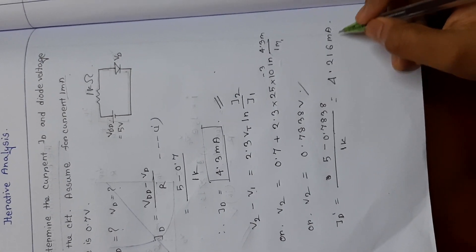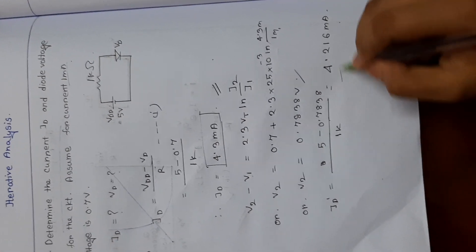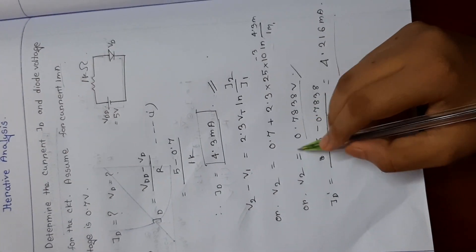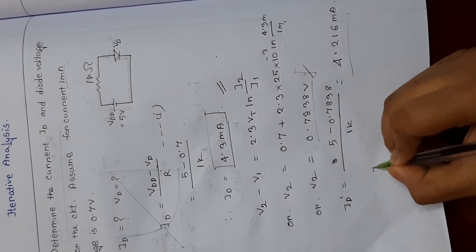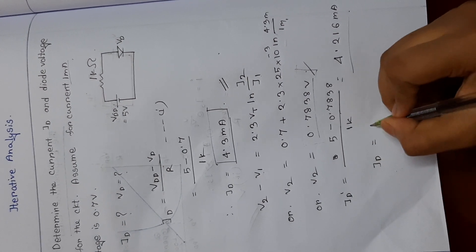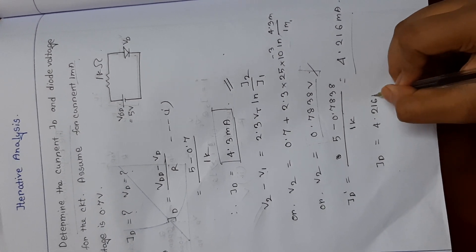And if I want to take more, actually I don't need to take more because I can see that it is almost near the actual results. So we can say that the diode current is 4.216 milliampere.